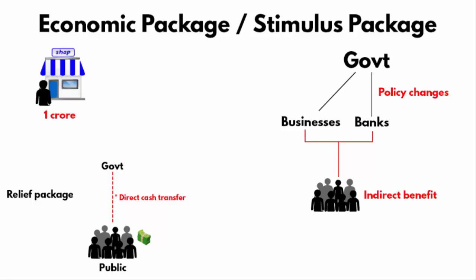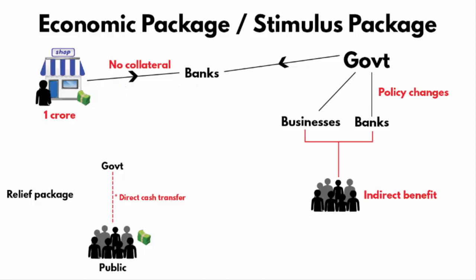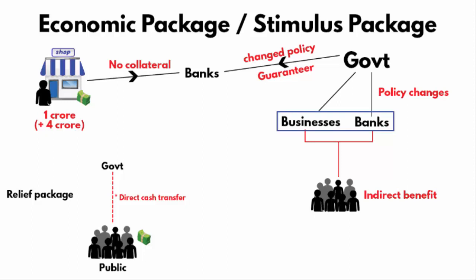For example, if you have a business with a turnover of 1 crore rupees, and the government changes policies so you can avail a loan without keeping any collateral — previously difficult due to many restrictions — and your turnover increases from 1 crore to 5 crores, the government did not put any real money. It simply changed the policy so you can avail the loan easily. In other words, the government has become a guarantor to the bank and financial institutions, meaning the burden comes on banks. An economic package is for businesses and institutions, not for the people directly.